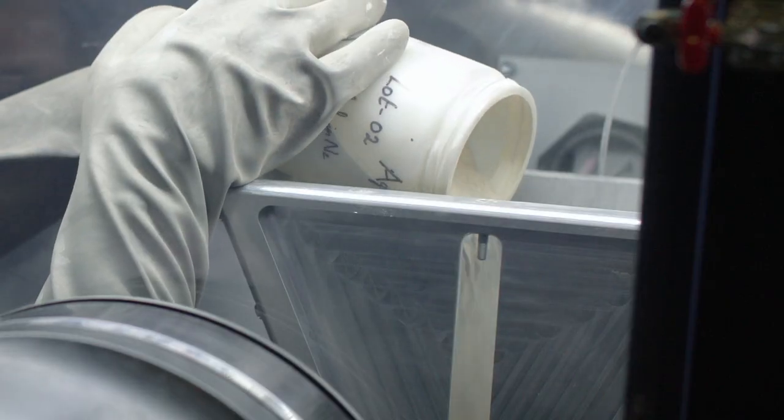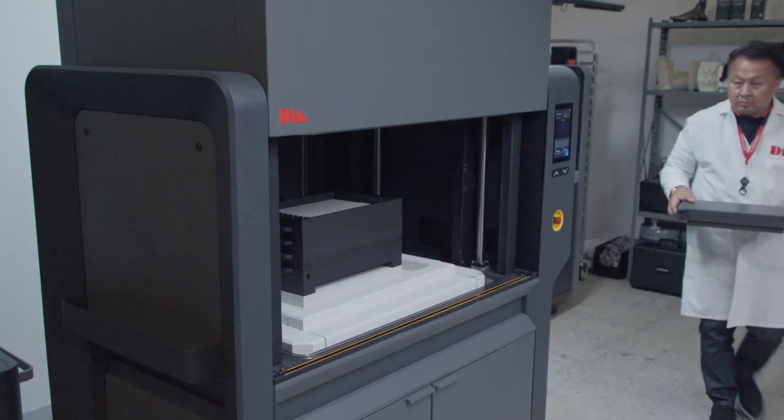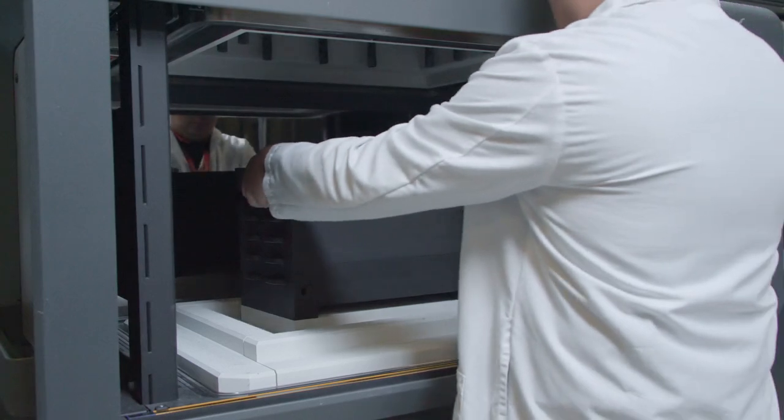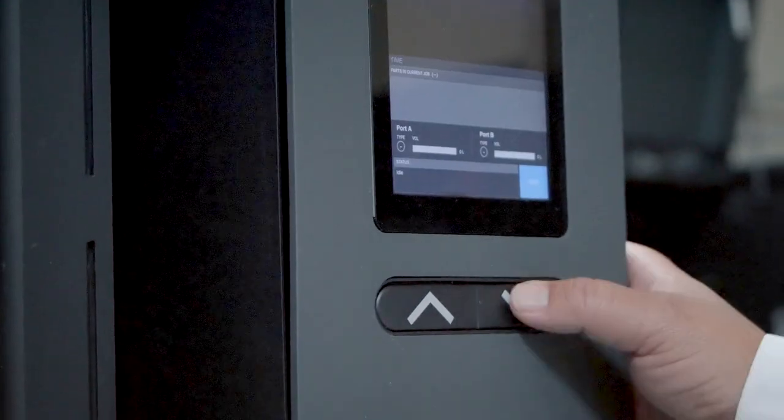In metal binder jet printing, depowdered parts are then prepared for sintering. Sintering is the final step in metal binder jetting and is critical for producing a highly dense precision part.